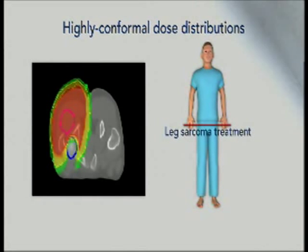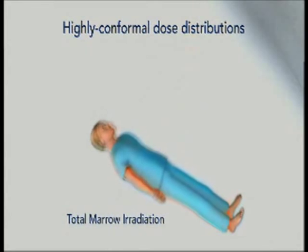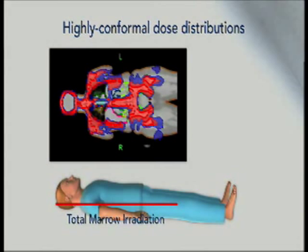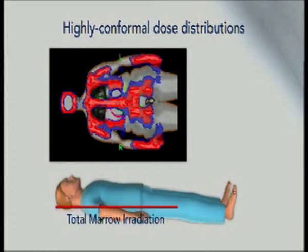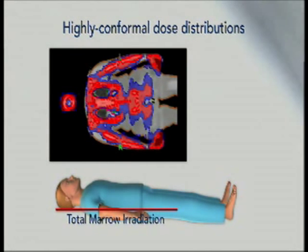In this leg sarcoma case, keeping the high dose region away from the right femur was a key objective. A technique known as total marrow irradiation, or TMI, can be used as preparation for a bone marrow transplant. With this exquisite dose sculpting, the brain, eyes, thyroid gland, lungs, heart, liver, kidneys, and small bowel are all protected. With TMI, the goal of white blood cell depletion is achieved, but with few gastrointestinal complications.